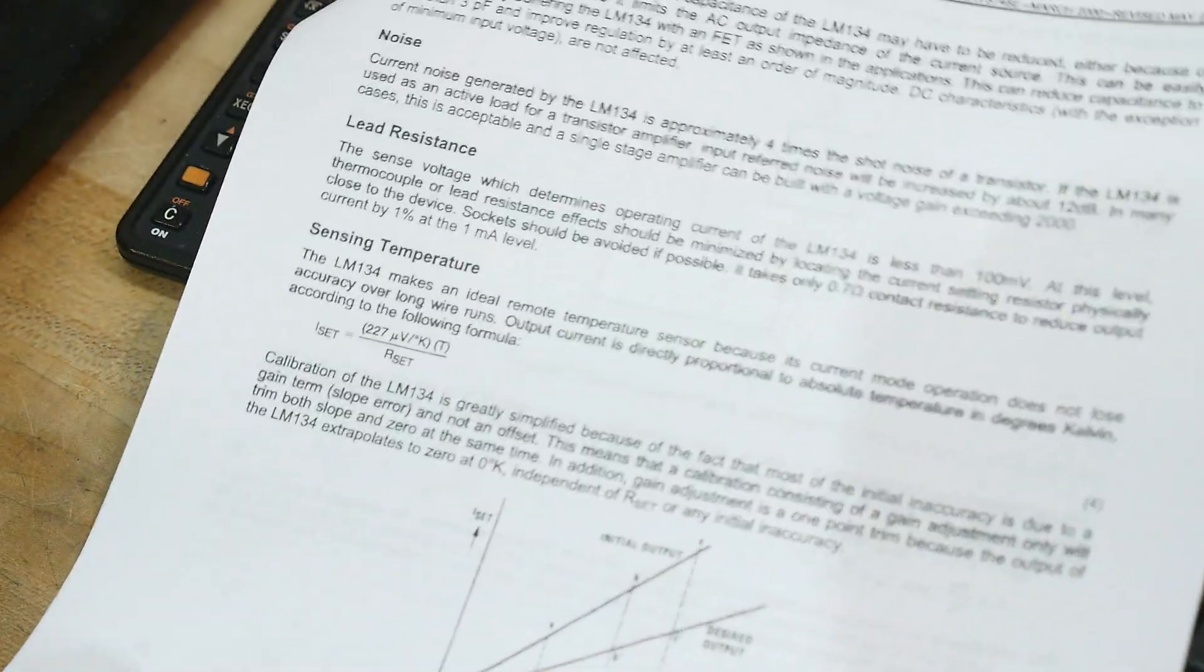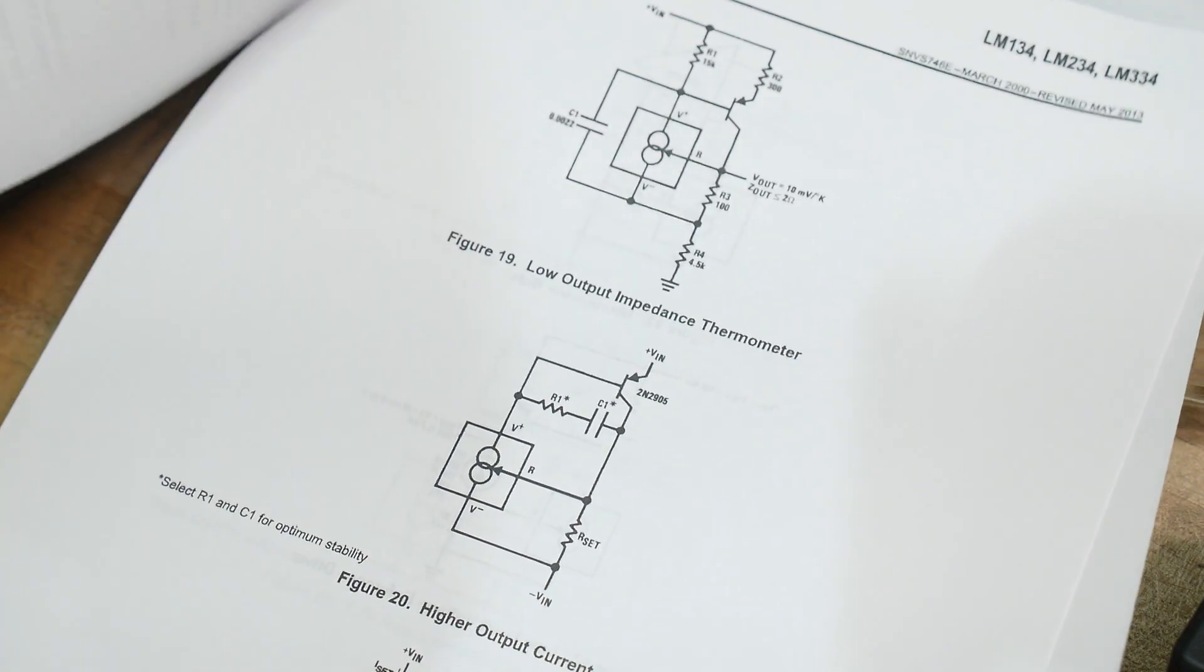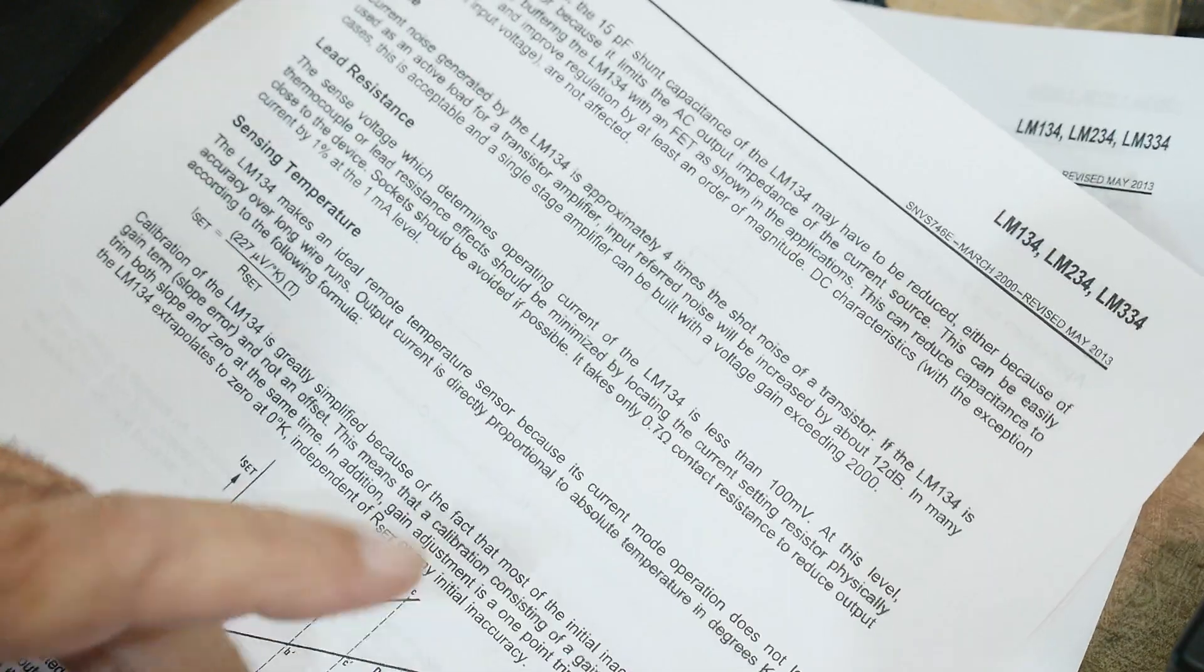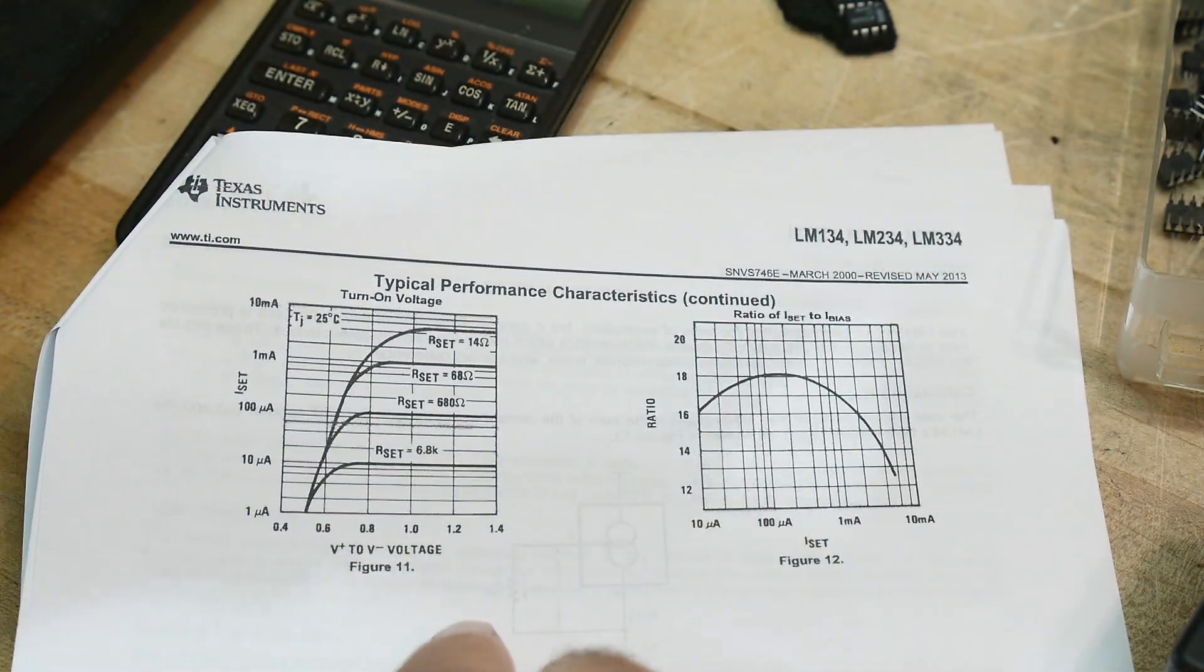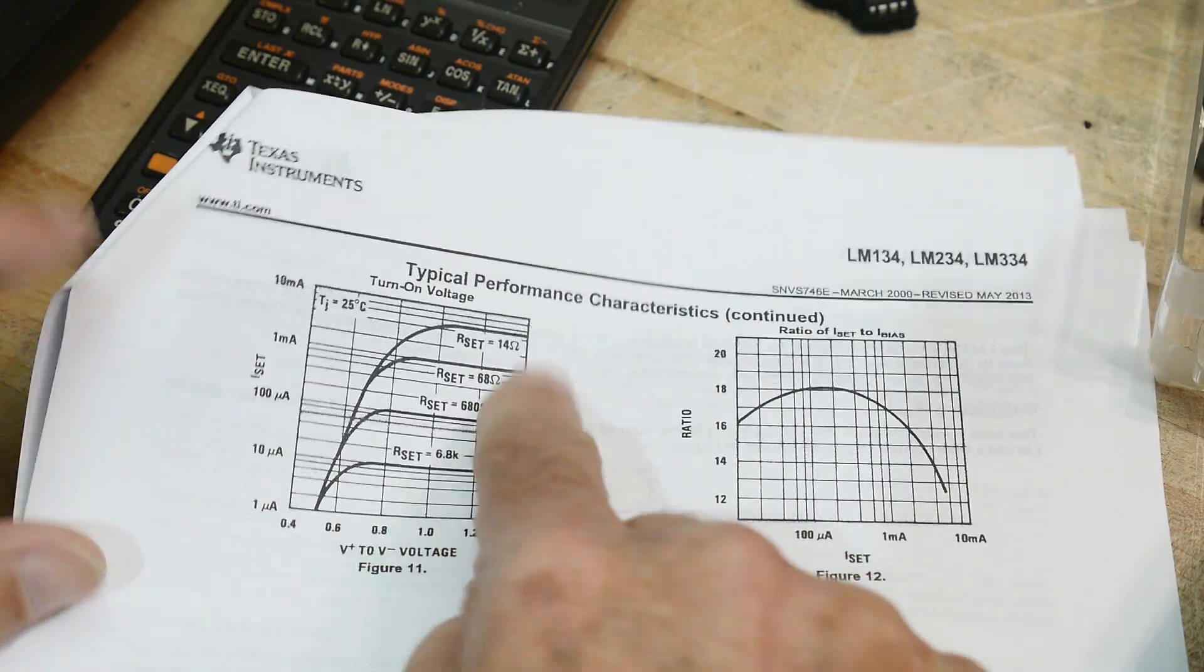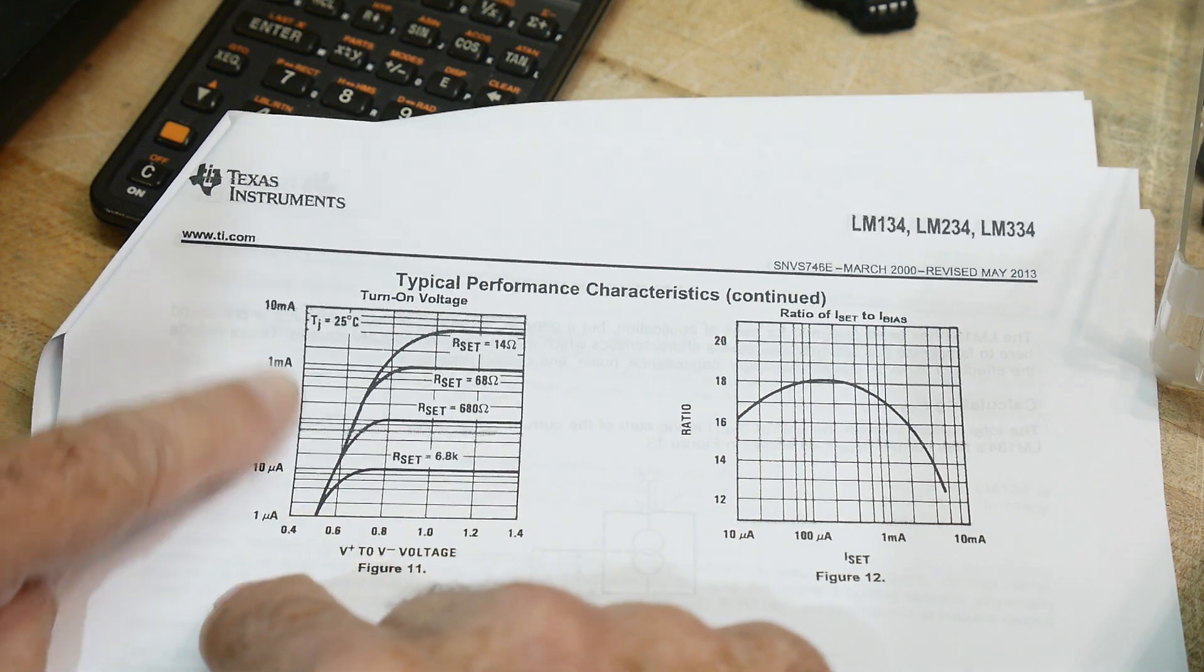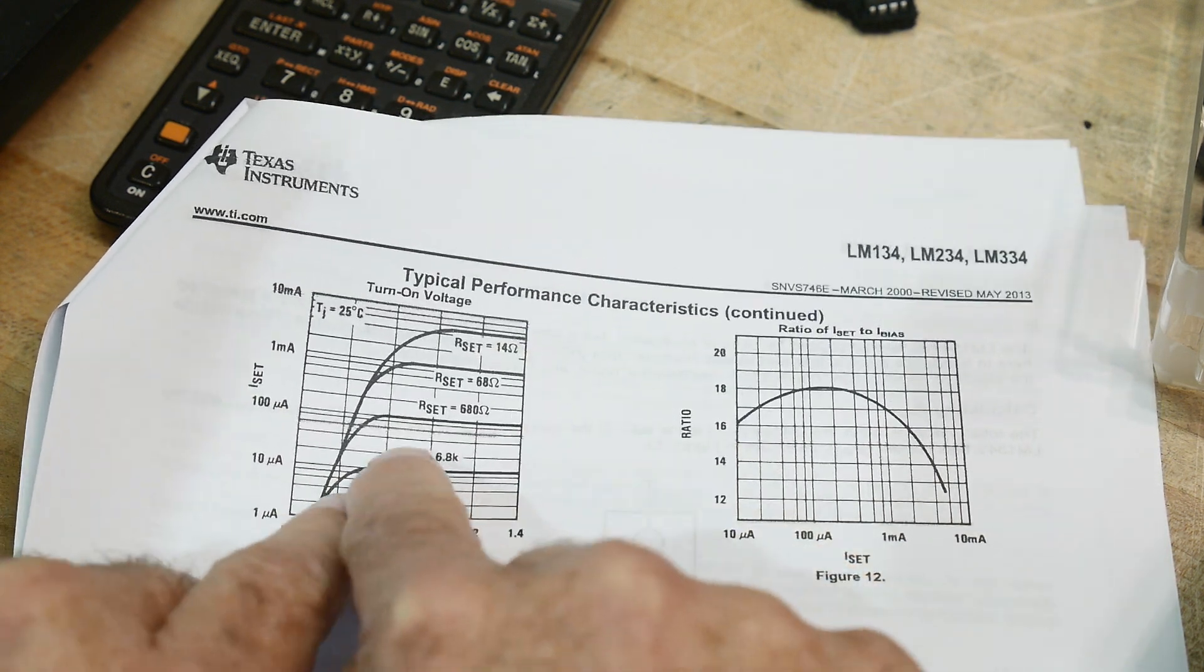So, lots of things about how it operates. Let me get to one of the graphs, which I think is more interesting for what we're going to do. Yeah, this is a good graph. So, we have the voltage, so we'll be out here somewhere. And then, these are the various currents. So, you can see here 1 microamp, 10, 100, 1 milliamp, 10 milliamps. And then, these are the resistance values.